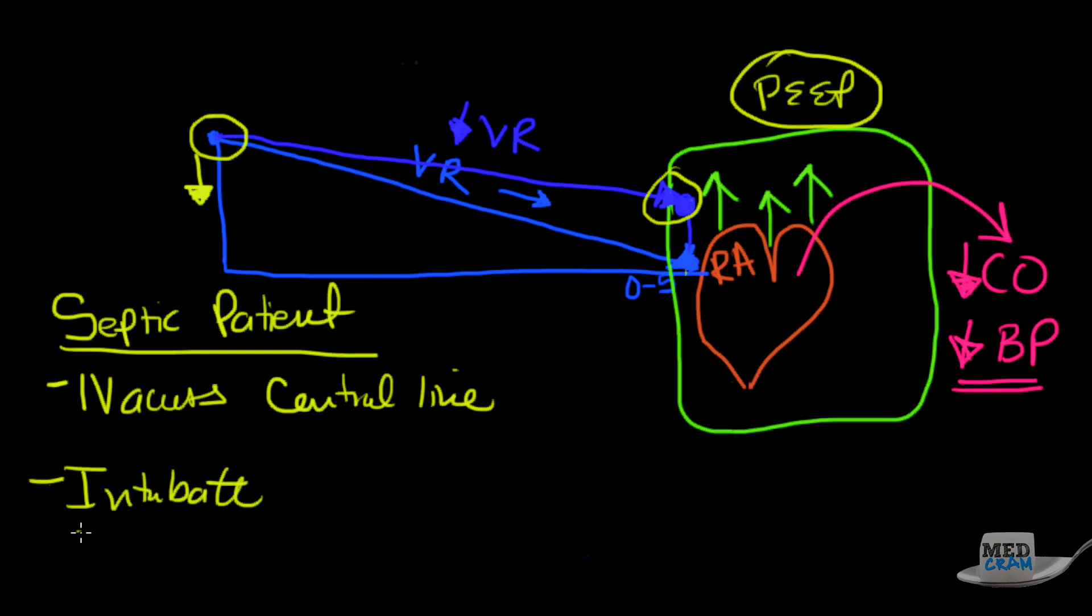Okay, so that's just a pearl there when it comes to understanding heart-lung interaction and the fact that the heart is in the thoracic cage and it's affected by intrapleural pressures.